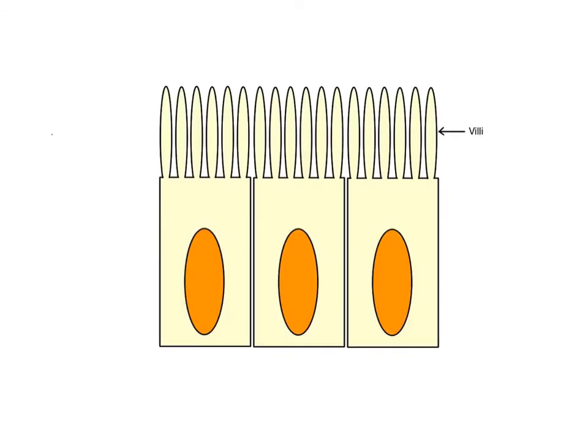This is why membranes and cells and organelles are often folded. A folded membrane packs more surface area into a very small space compared to a smooth, unfolded membrane. So cells with a very high membrane surface area, like these simple columnar epithelial cells lining the small intestine with their folded finger-like villi, experience a much faster diffusion rate as they absorb nutrients.